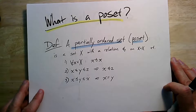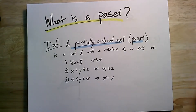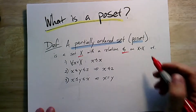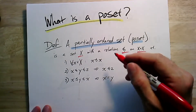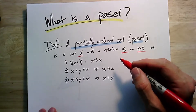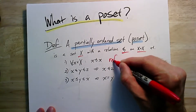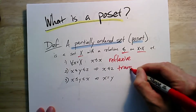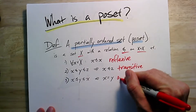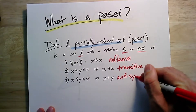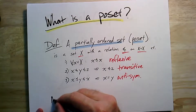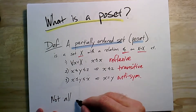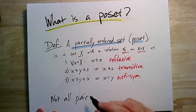So what is a poset? A partially ordered set is a set X with some relation — we'll call it less than or equal to — it's a binary relation and it has to have these three properties: namely that it's reflexive, transitive, and anti-symmetric. Not all pairs are necessarily comparable. If all the pairs are comparable, then that would be what's called a total order.